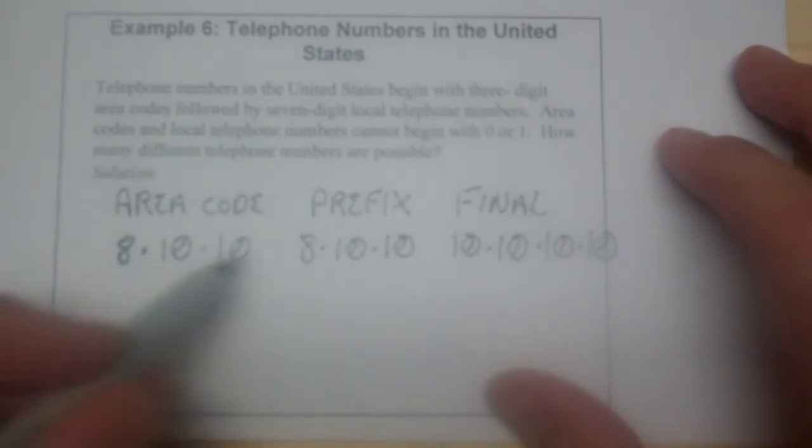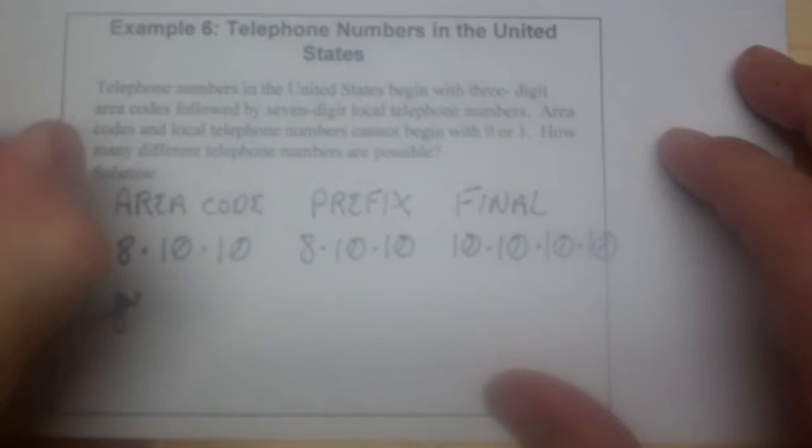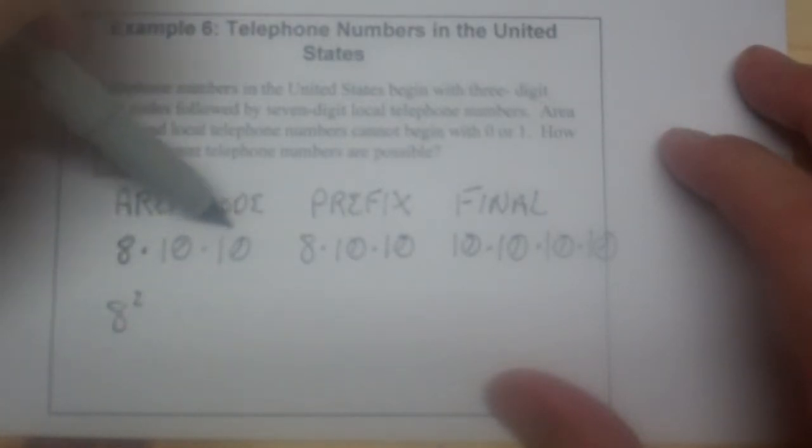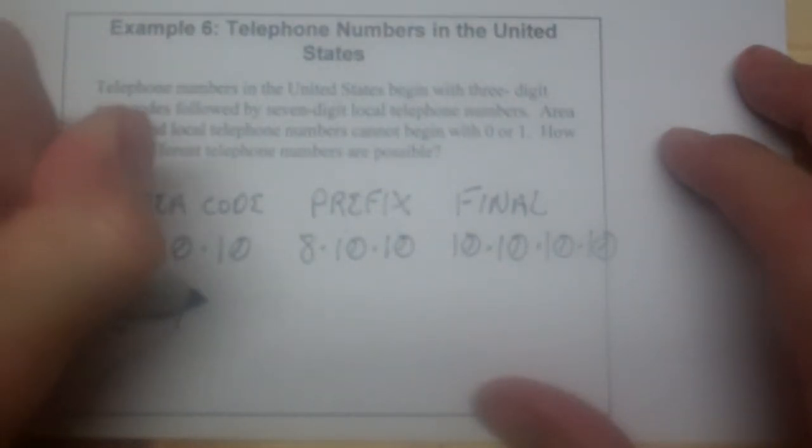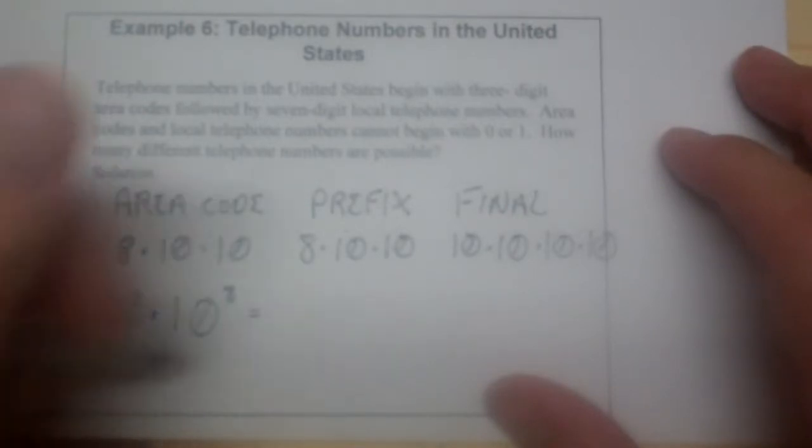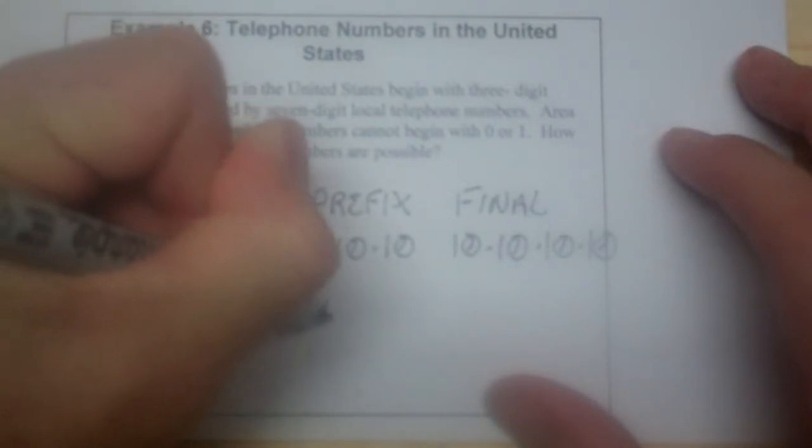So now if you look, I've got two eights, so that's like eight squared. And I've got one, two, three, four, five, six, seven, eight tens. So I can write that in exponential form. And if you plug that into your calculator and you count all the zeros, you get six billion, four hundred million. And you're thinking, wow, that's a lot.